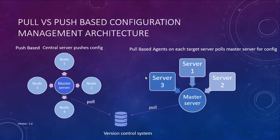It is called pull-based because an agent pulls the configuration information from the master server. In a push-based architecture, a central server pushes the configuration changes onto the target systems. Ansible is push-based.